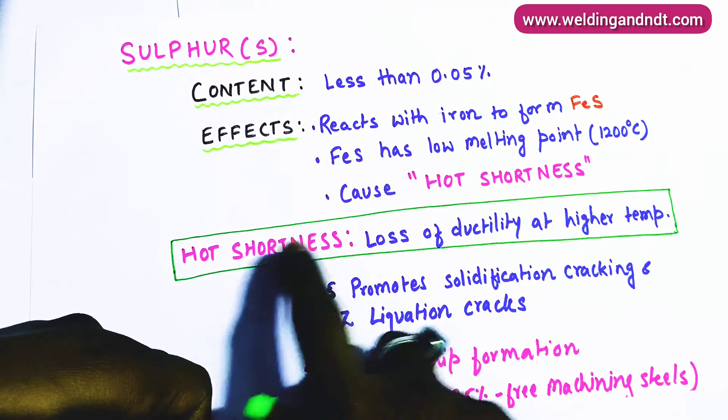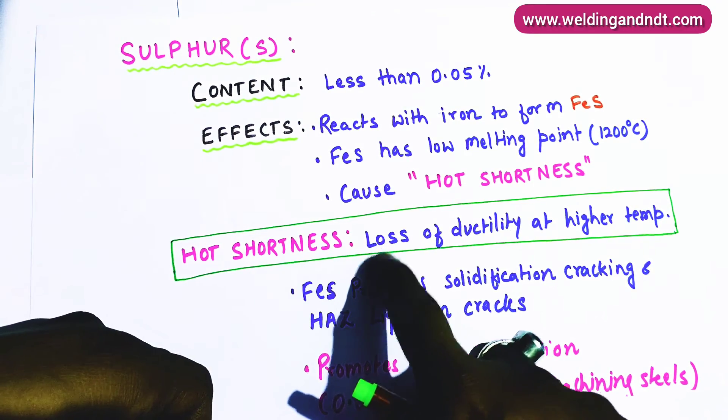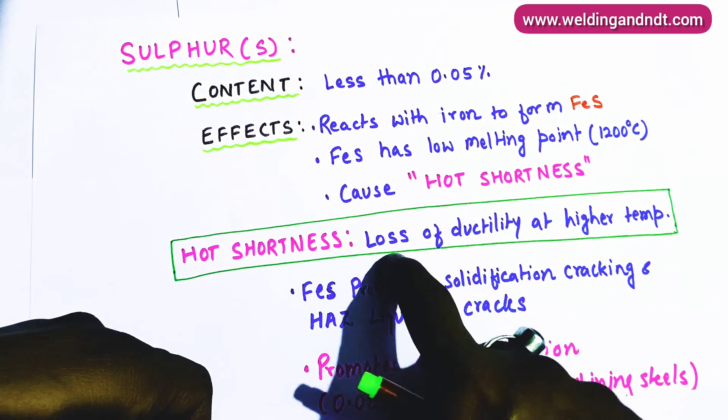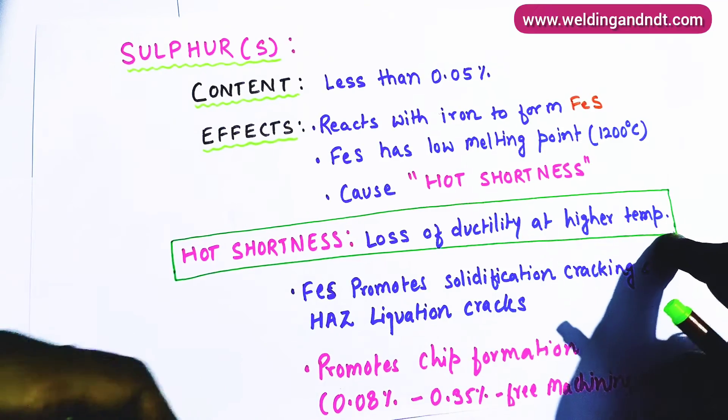What is hot shortness? Hot shortness is nothing but loss of ductility at higher temperature.